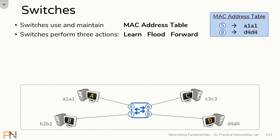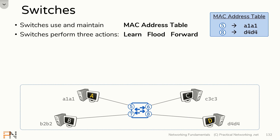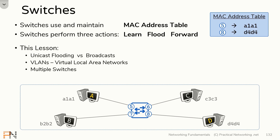In the first part of this lesson we discussed MAC address tables and how they work and the three actions a switch will take. If you haven't seen that video go ahead and pause this video and watch that video first. This video is a direct continuation. In this video we're going to introduce three more ideas: unicast flooding and broadcast, VLANs, and how these actions apply when multiple switches are involved.